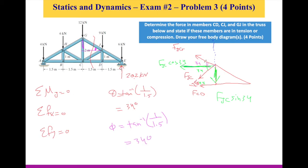So now I can resolve FJG into two components. The Y component here is going to be FJG sine 34. And I will have another force here on the X-axis. And that's going to be FJG cosine 34.